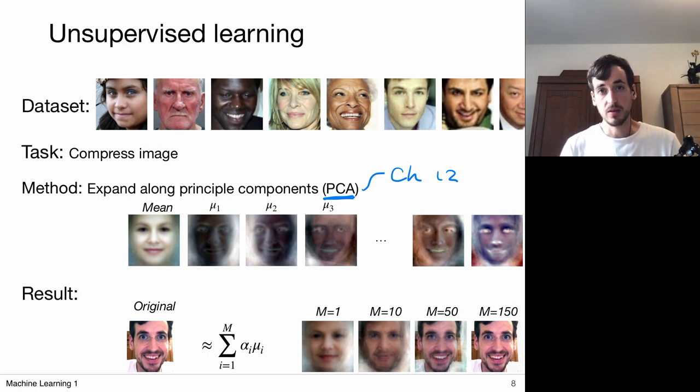So what principal component analysis also does, it looks for differences between these images. It looks for components, principal components, which are visualized over here, which are also called Eigen faces in the computer vision community, which explain the differences between these images.